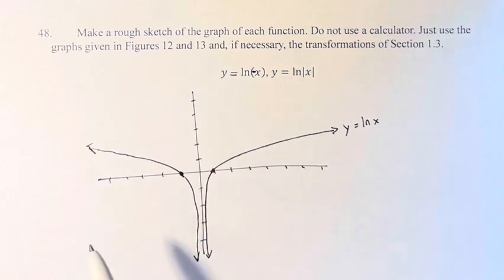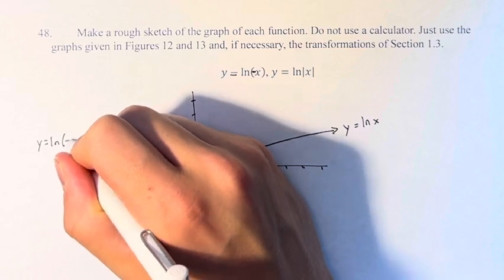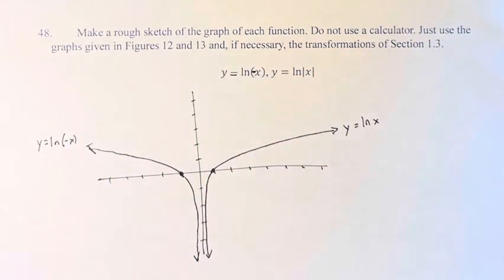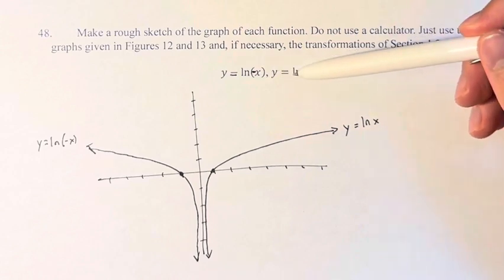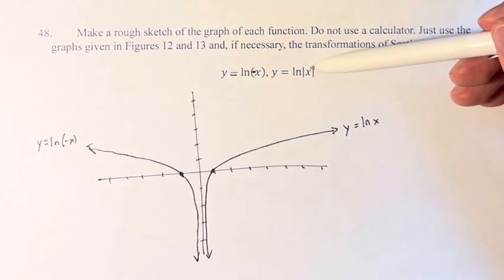We just have the mirror image across this line. So this is y = ln(-x). Here we have y = ln(|x|). So what does that mean?